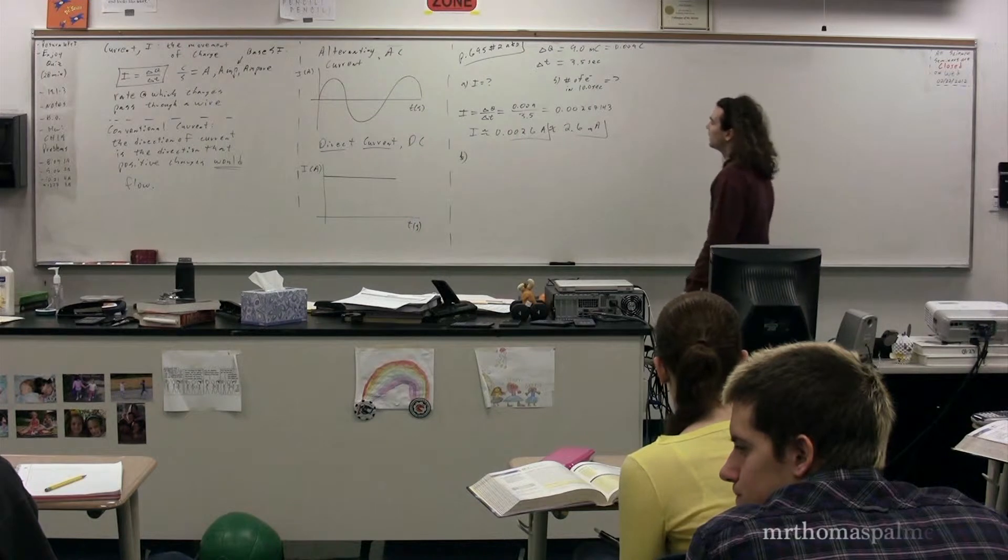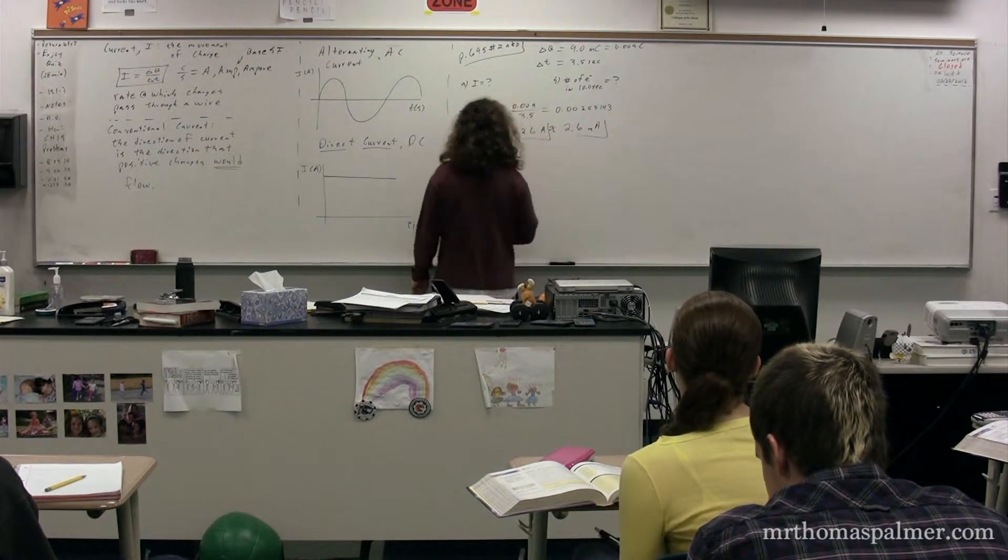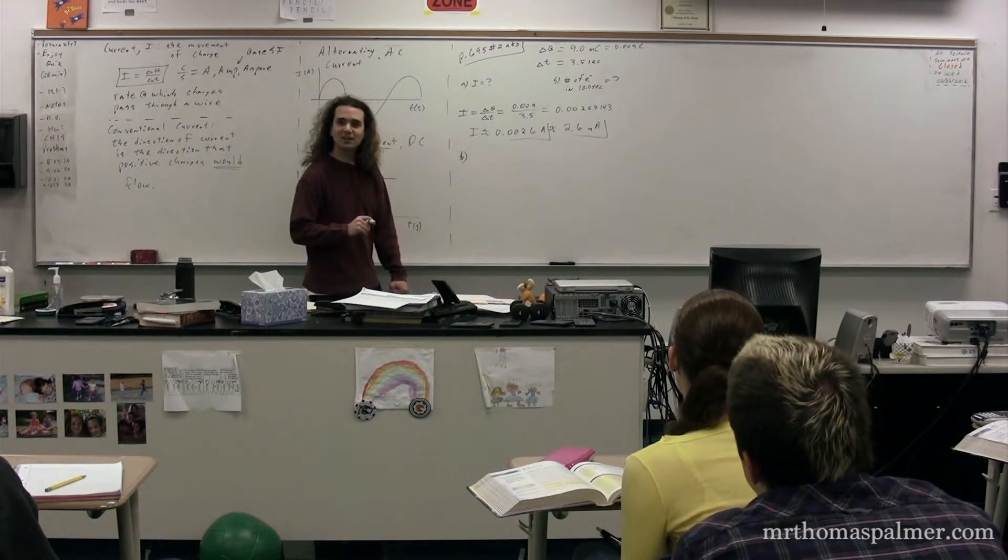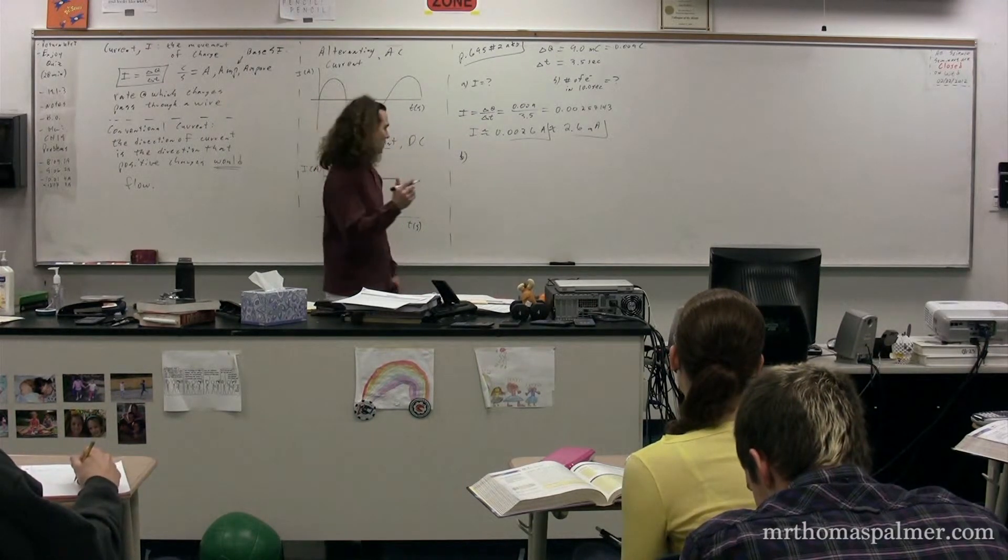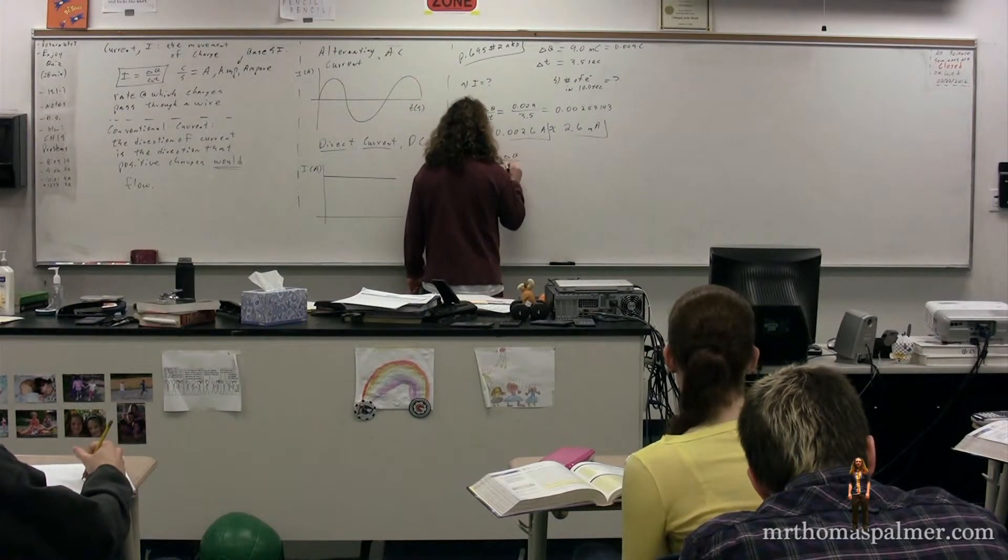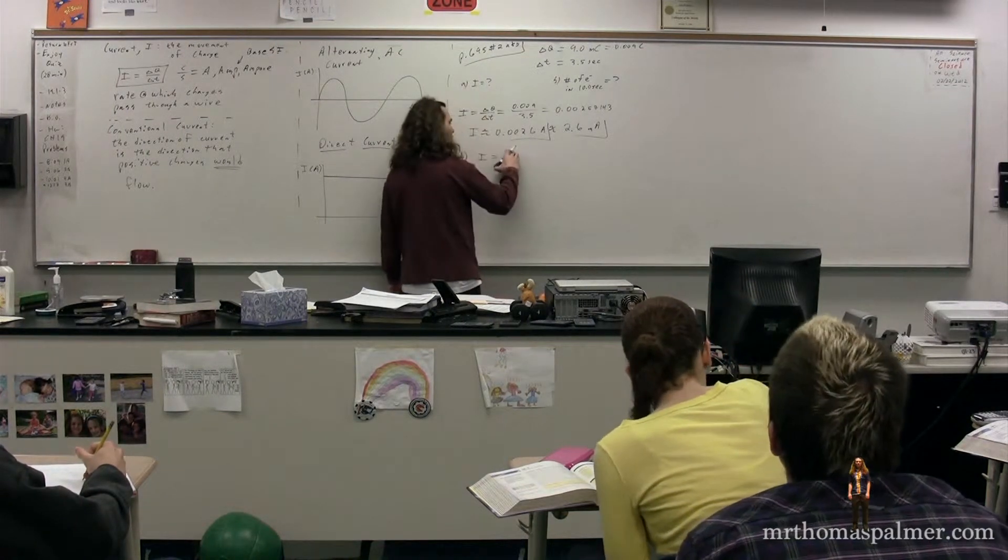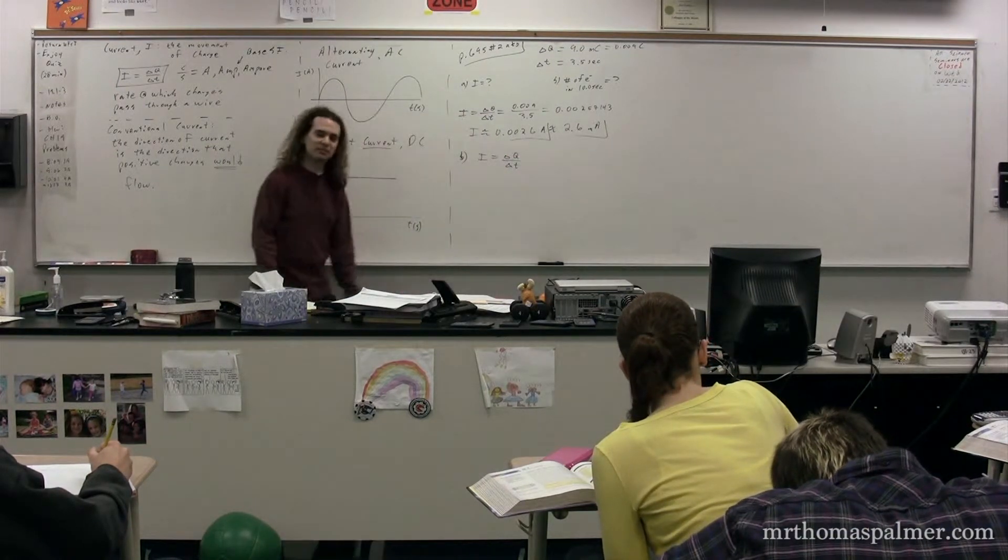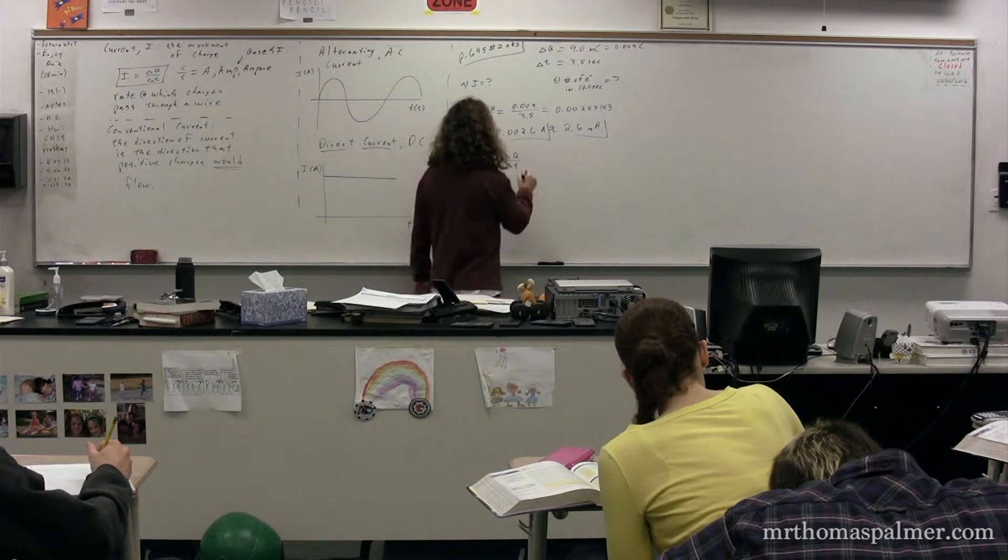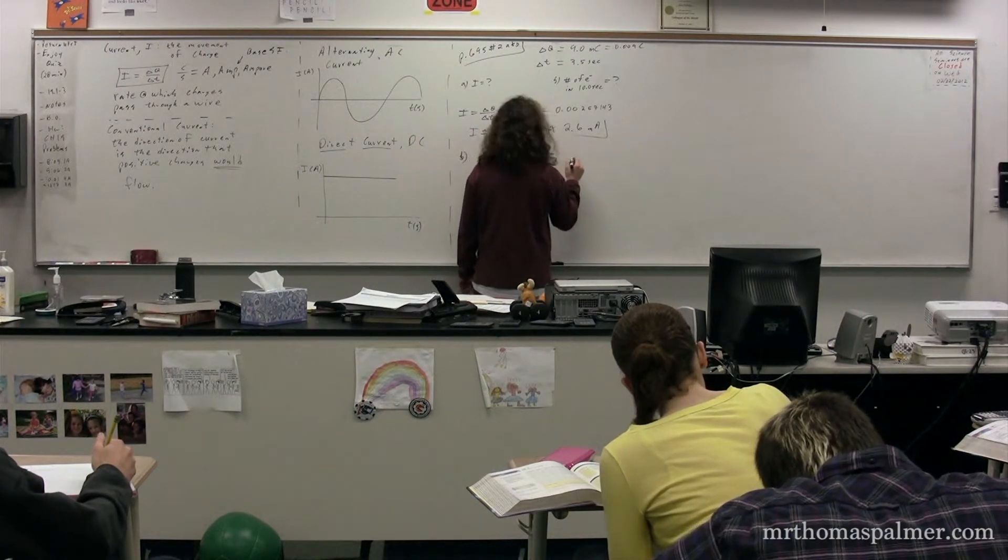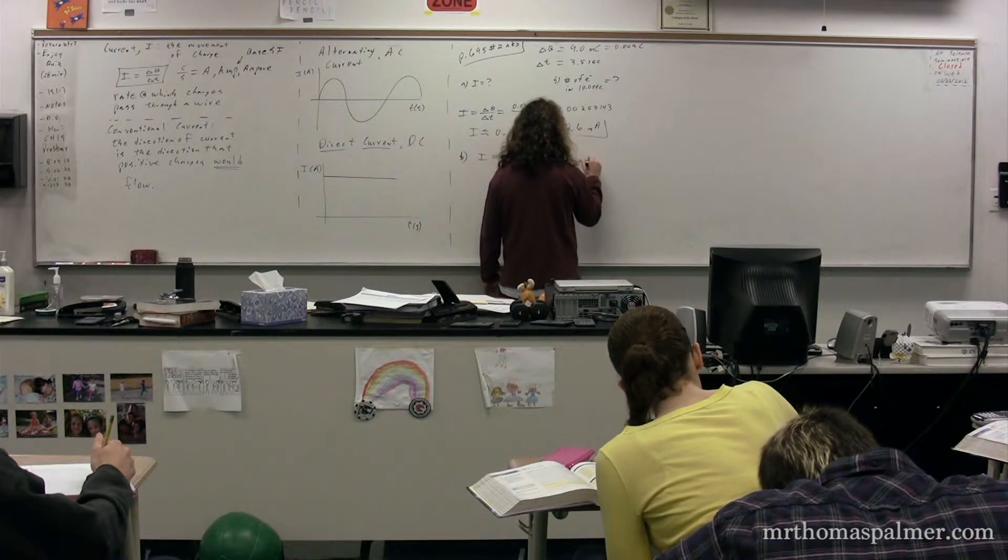I think we would put 0.0026 for the current. And then leave delta q as a variable, and then for time. We now have figured out our current, but the delta q is the variable, because we need to figure out first the charge that passes through the wire in 10 seconds. So the change in charge, or delta q, is equal to the current times the change in time.